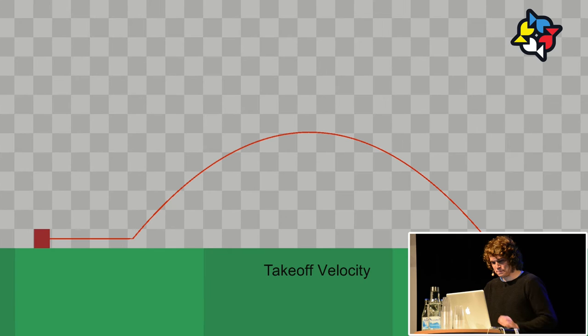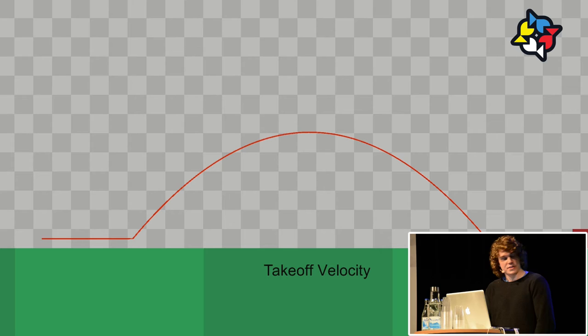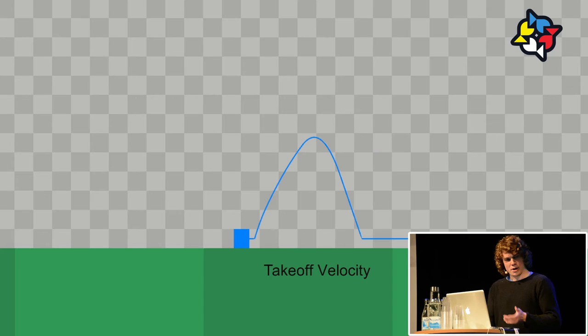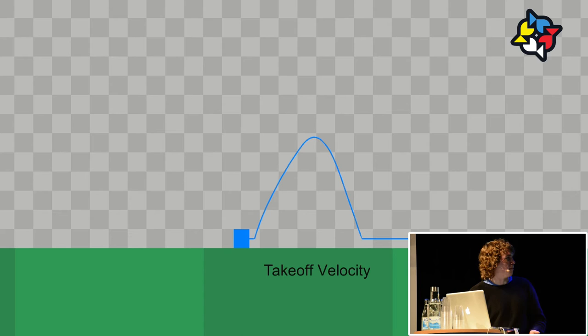Now we get to the jump. For Meat Boy it's simple: one impulse — a takeoff velocity that sends him into the air — then gravity slowly brings him back down. That's the end of the story for his basic jump. This was roughly the jump I imagined would be in these games.